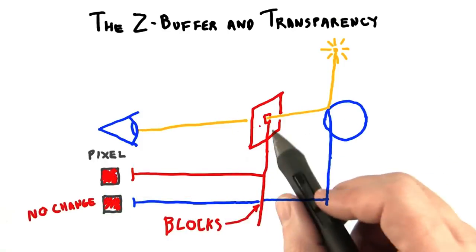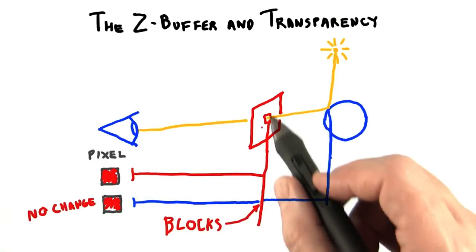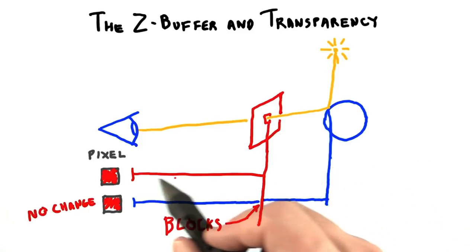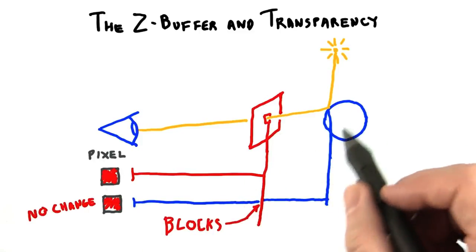However, if we reverse the draw order, we start to get into problems. We get the red fragment and want to blend it, but we don't even have the blue object in the z buffer yet.